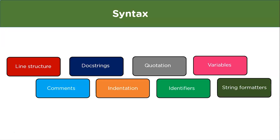Identifiers are used to uniquely define an element in Python — that element can be a variable, function, class, etc. There are some rules: an identifier can only begin with uppercase A–Z, lowercase a–z, or an underscore. Next are variables — Python is a dynamically typed language, so we don't define the type of a variable explicitly.